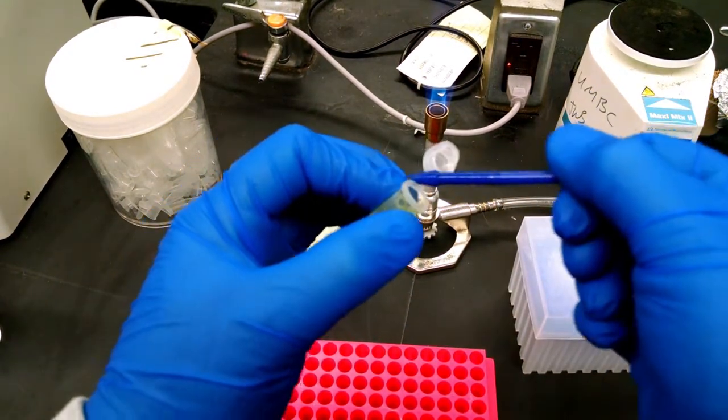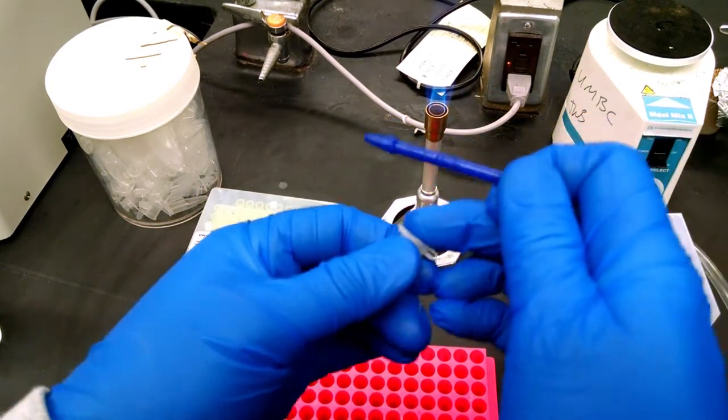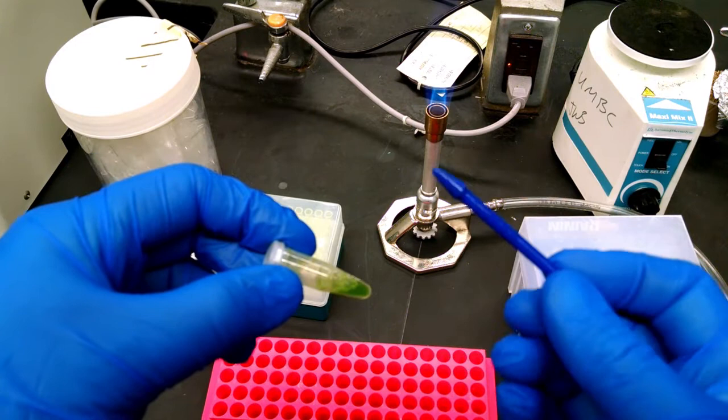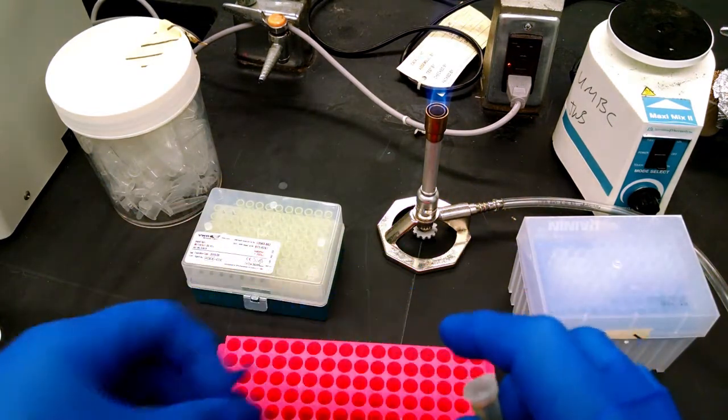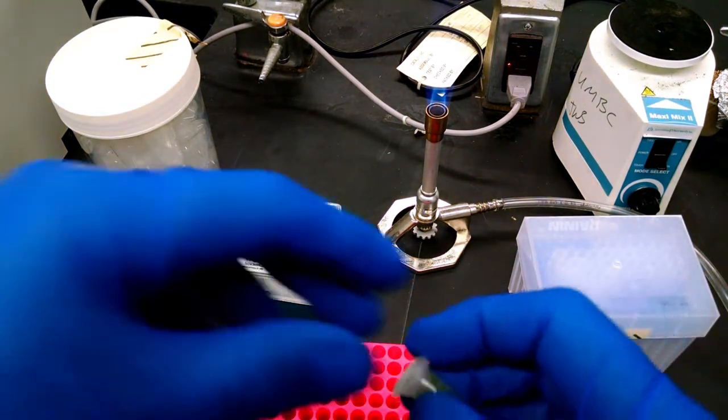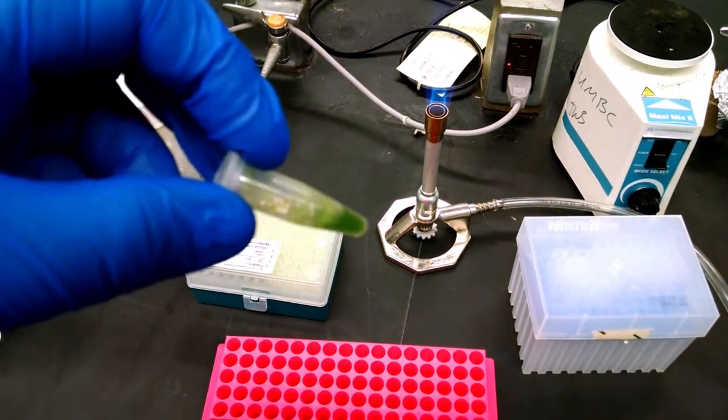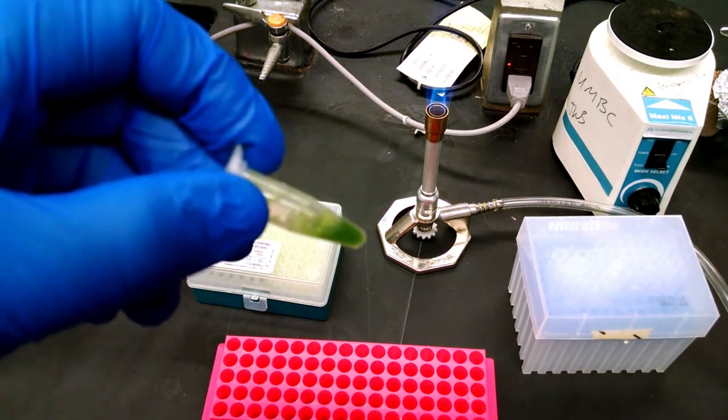Alright, so I'm going to stop this now, but you make sure you do it for a good two solid minutes. So this, you're going to clean and reuse, so we're going to set this aside. And we have smashed, mashed, homogenized Arabidopsis leaf.